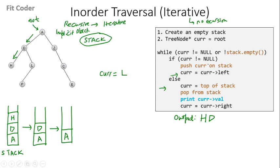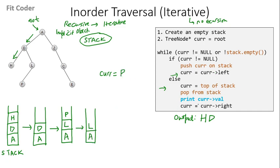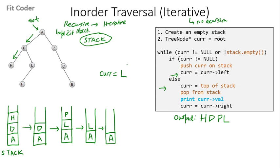Current is not null, so we push L and current points to the left of L, which is P. We again check the while condition: current is not null, so we push P onto the stack and current points to the left of P, which is null. Stack is not empty so we come into the else condition: current points to top of stack which is P, we pop P, print P, and current points to right of P, which is null. Stack is not empty, so current points to top of stack which is L, we pop L and print L. Stack is not empty, so current points to top which is A, we pop A — stack is now empty — and we print A.